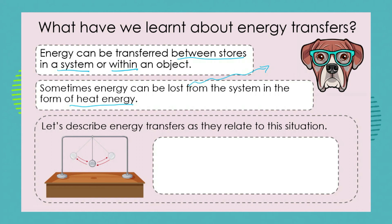Describing the energy transfers for a pendulum: as it swings up it has kinetic energy; at the top of its swing it has potential energy; it swings back down and has kinetic energy; at the top again it has potential energy. This is an ongoing transfer between potential energy and kinetic energy. But we mustn't forget that in a system, energy is also lost to the environment as heat energy — we call that wasted energy because it's not helping the pendulum or the players at all.